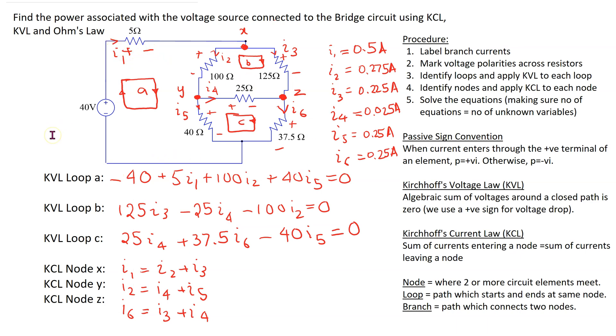Now we can determine the power associated with the voltage source. The power associated with the voltage source is the product of the voltage, which is 40, and the current, which is I1. We need to use passive sign convention to decide the sign of this power calculation. Since I1 is entering the terminal marked minus, we use power equals minus VI, so this is written with a minus sign.